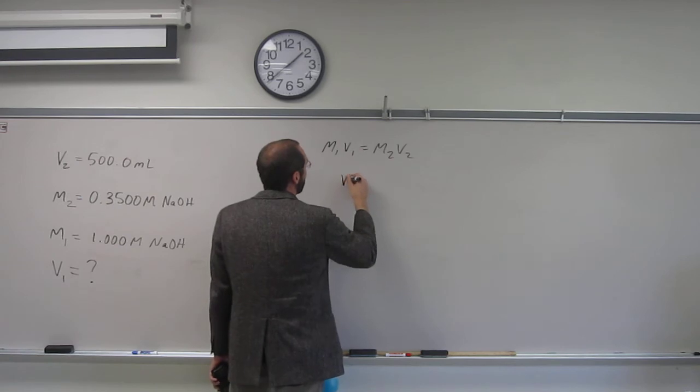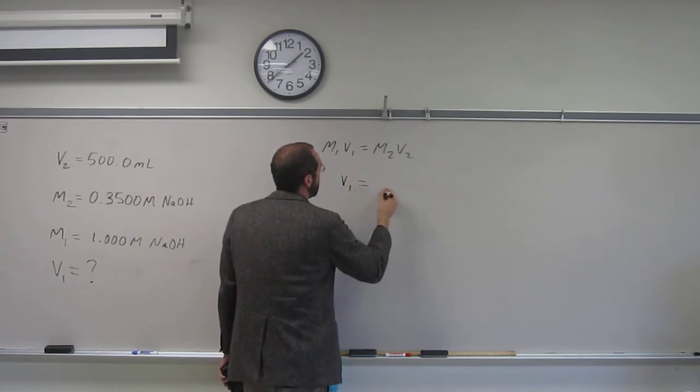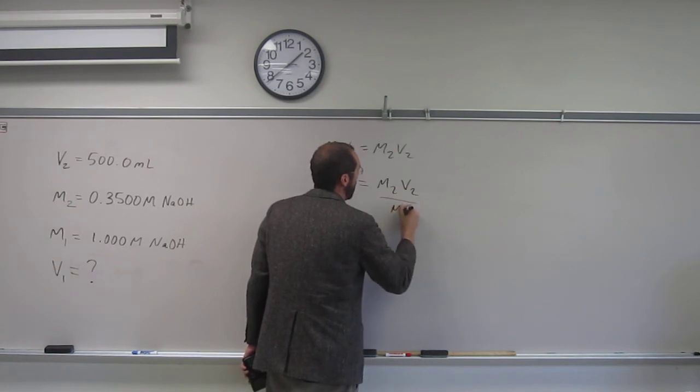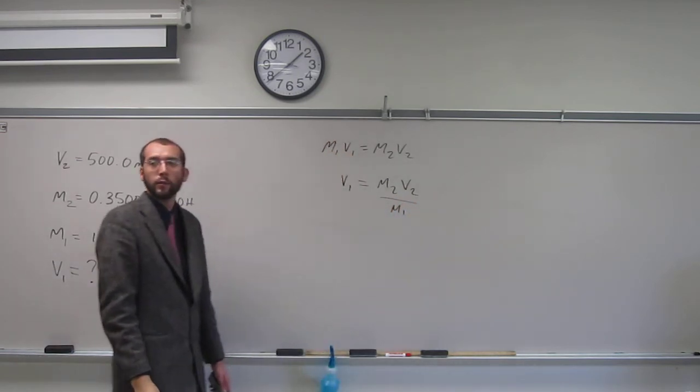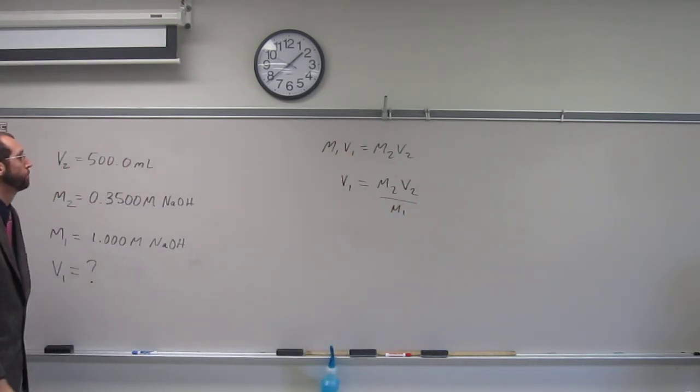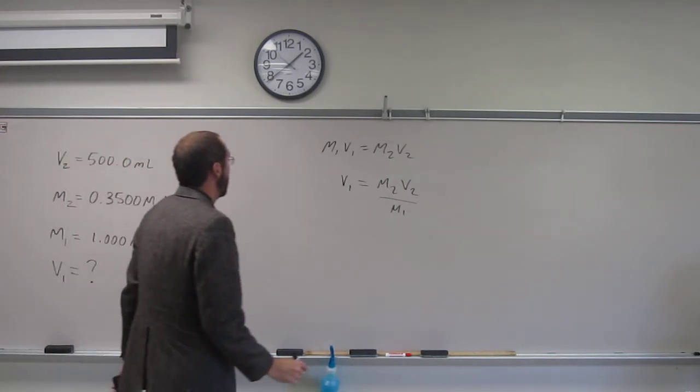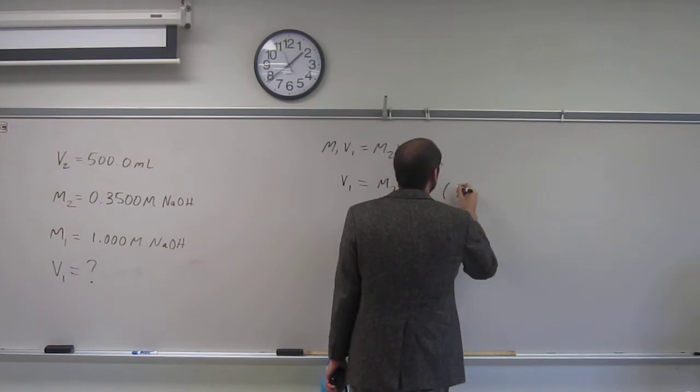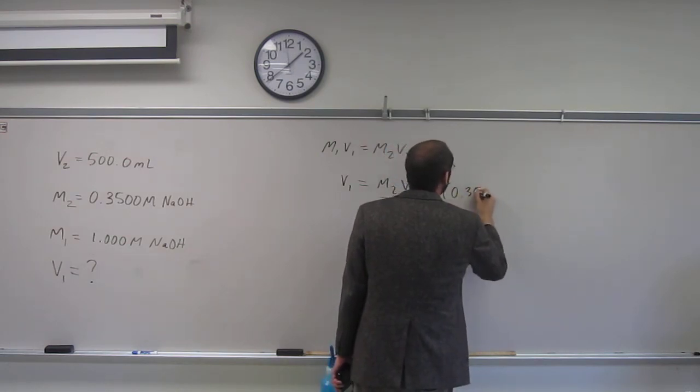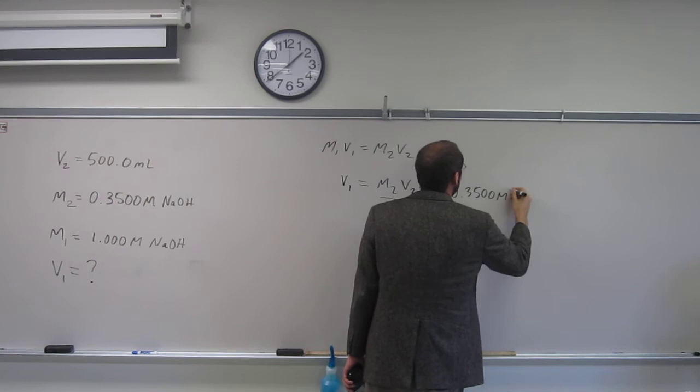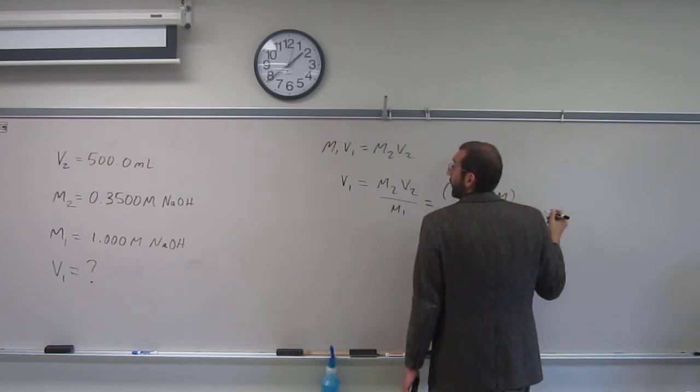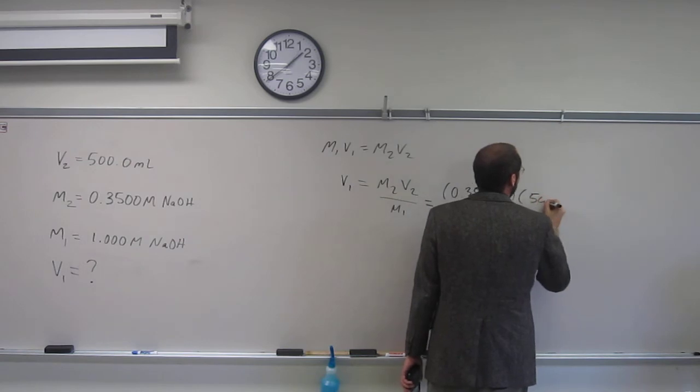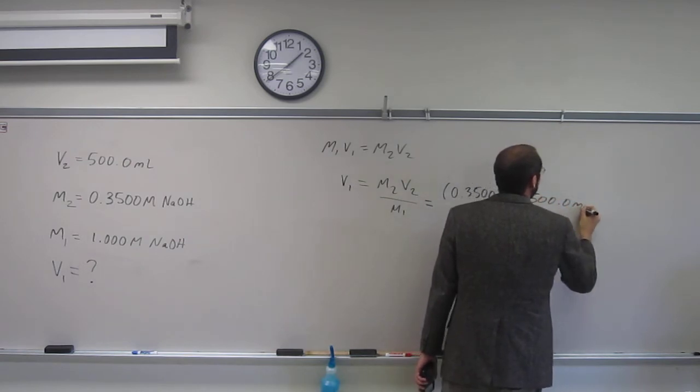So how do I do that? Well, I divide both sides by M1. So I get that. So all we do now is plug and check. So M2, 0.3500 molar, times volume 2, 500.0 mils,